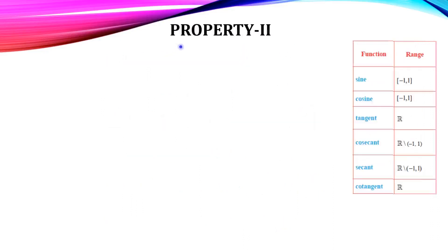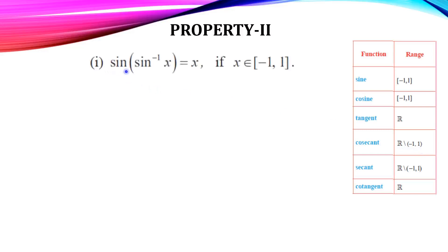Next we are going to see Property 2. Before that, recall the range of trigonometric functions. For sine and cosine, the range is the closed interval [−1, 1]. For tangent and cotangent, the range is all real numbers. For cosecant and secant, real numbers except the open interval (−1, 1). So, sin of sin inverse of x equals x, since sin and sin inverse cancel; x must belong to [−1, 1].